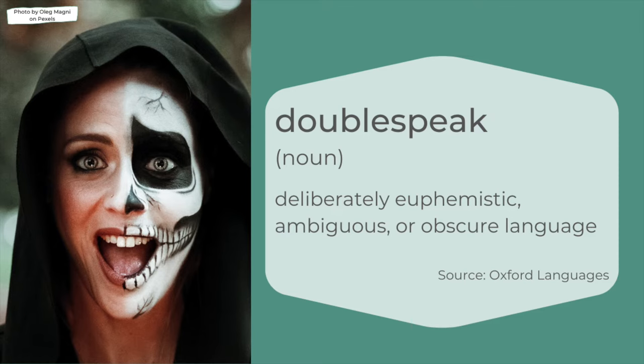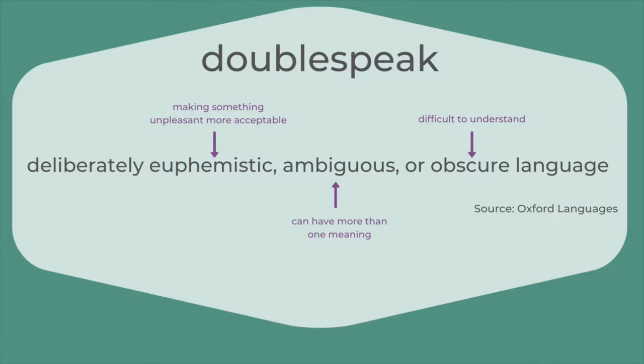Doublespeak is deliberately euphemistic, ambiguous, or obscure language. This is one of those definitions that needs its own explanation. Euphemistic means making something unpleasant more acceptable. Ambiguous means it can have more than one meaning, and obscure means difficult to understand.